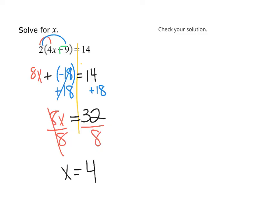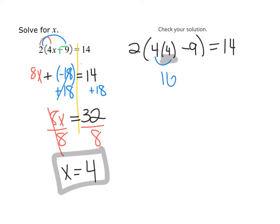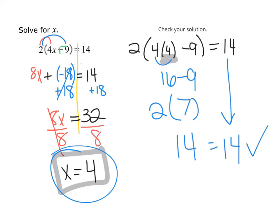I'm going to go back in and check our solution. We have 2 times 4 minus 9 equals 14. And again, I took this solution and I substituted it in over here. Let's see if the left side and the right side balance. 4 times 4 is 16. 16 minus 9 is 7. And 2 times 7 is 14. And if I check, that does equal the right-hand side. So, our answer of x equals 4 is correct.